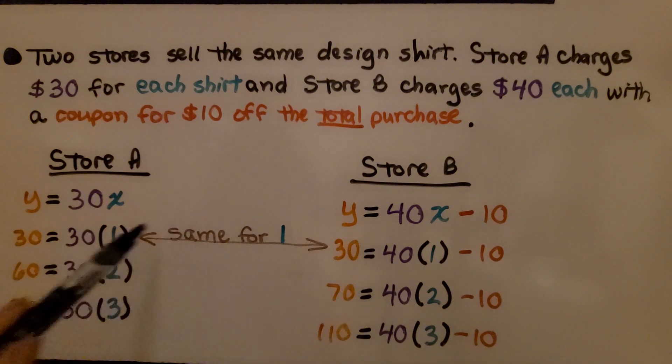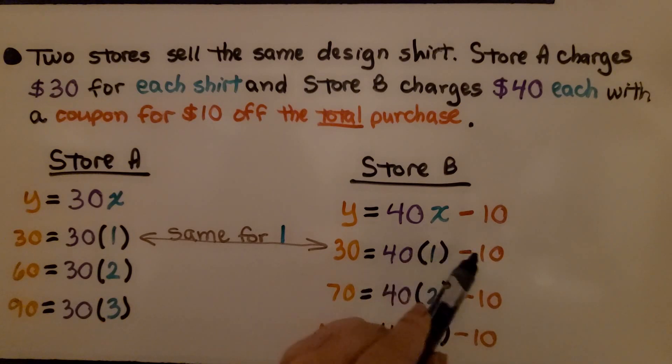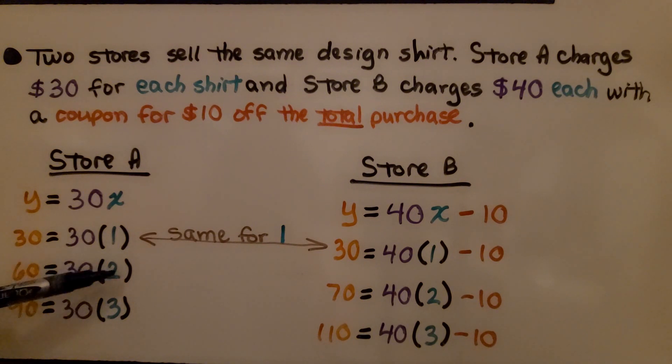When we buy one shirt, it's the same price. When we take the $10 off, the y value is $30, just like store A. But, when we buy two shirts, well, now store B is $70, and store A is $60. When we buy three shirts, now store B is $110, and store A is only $90.